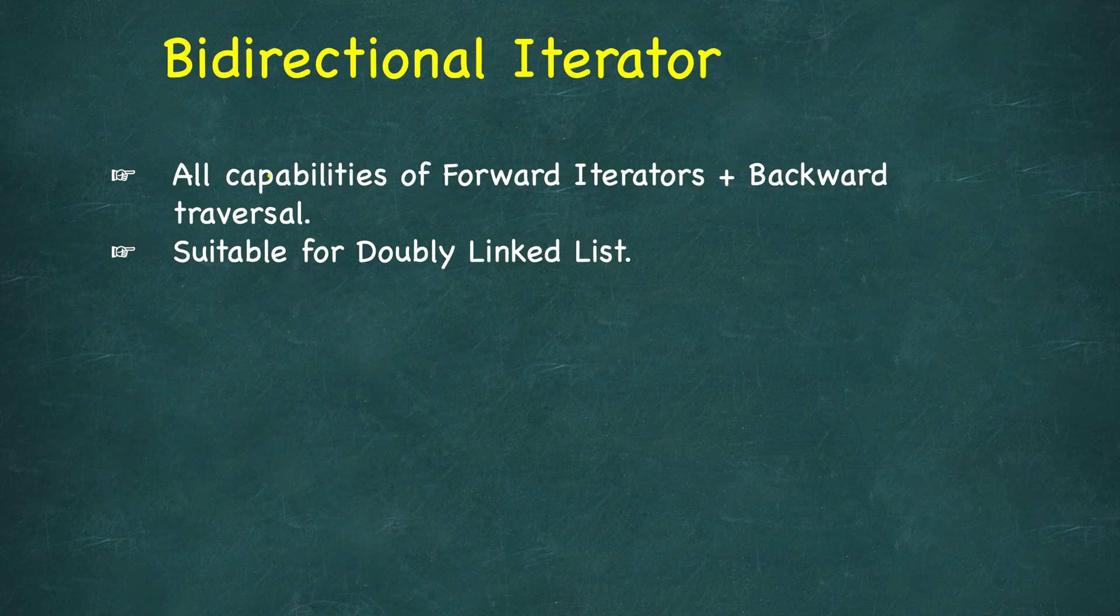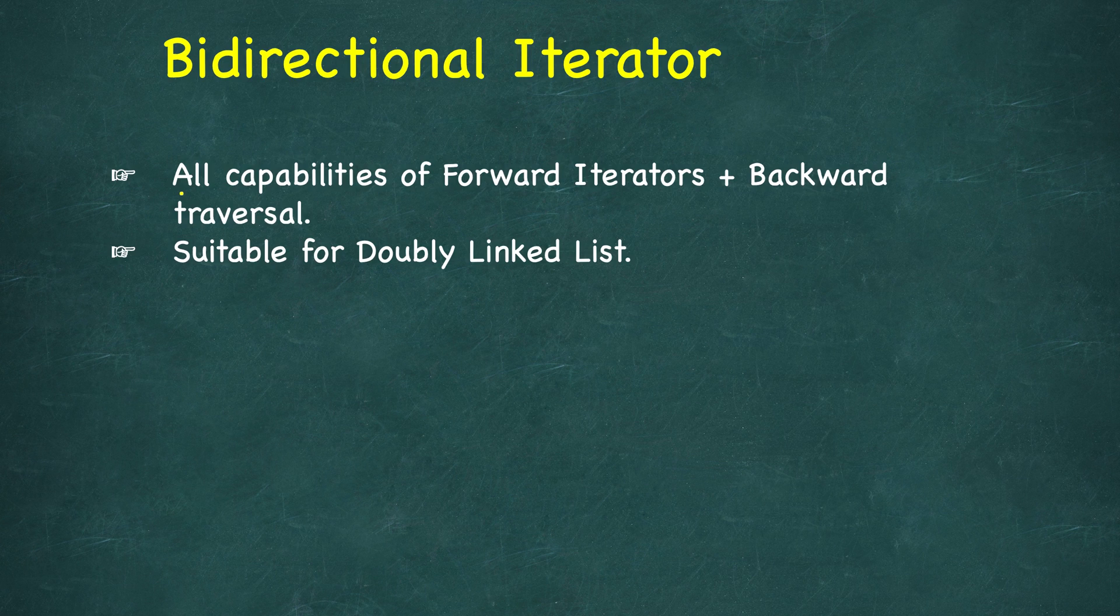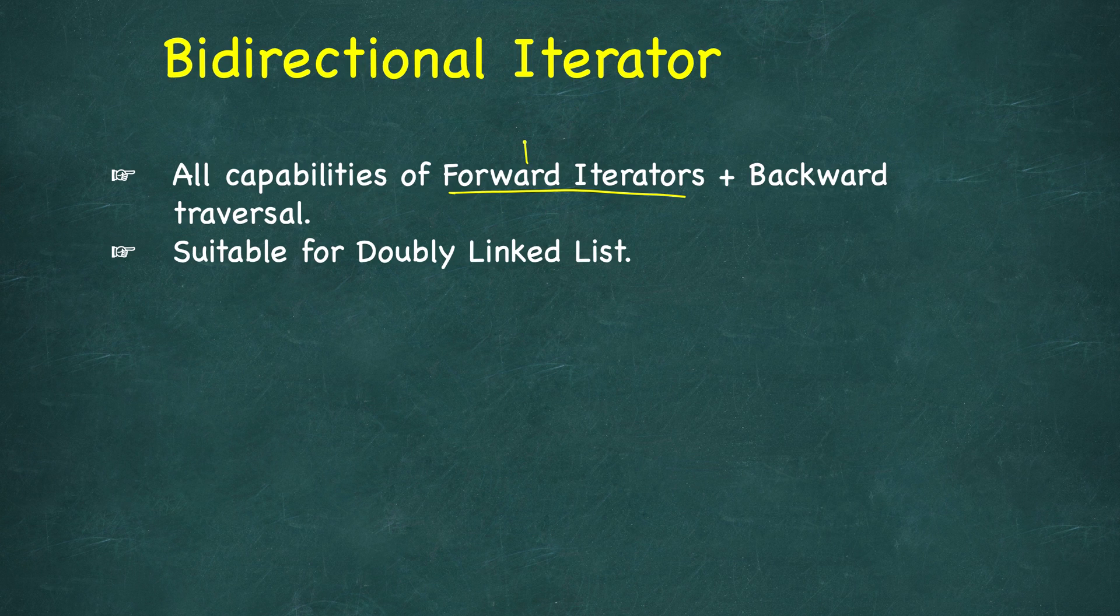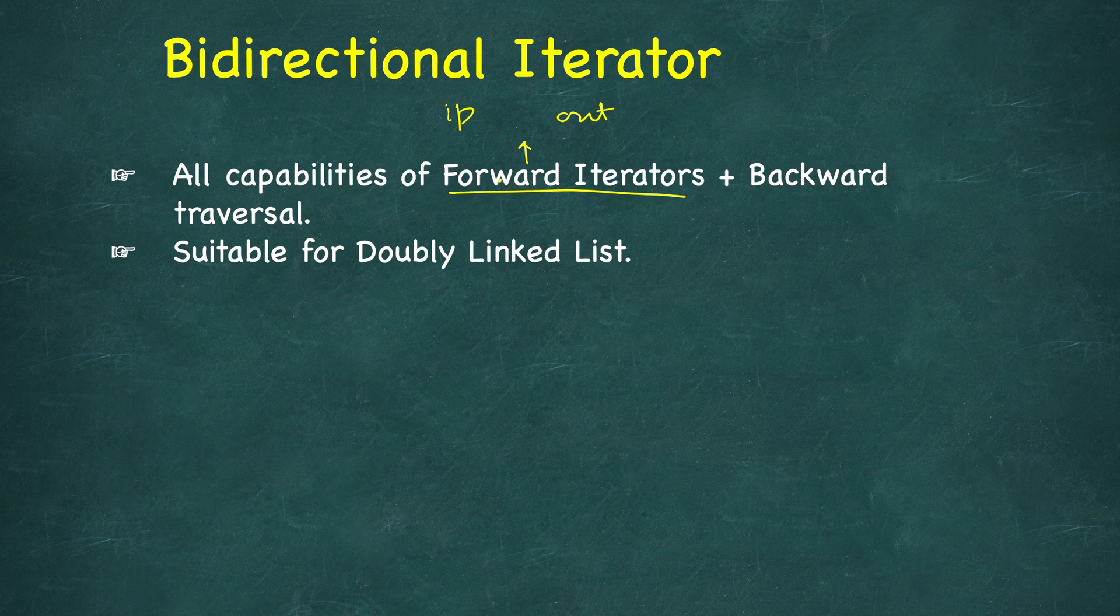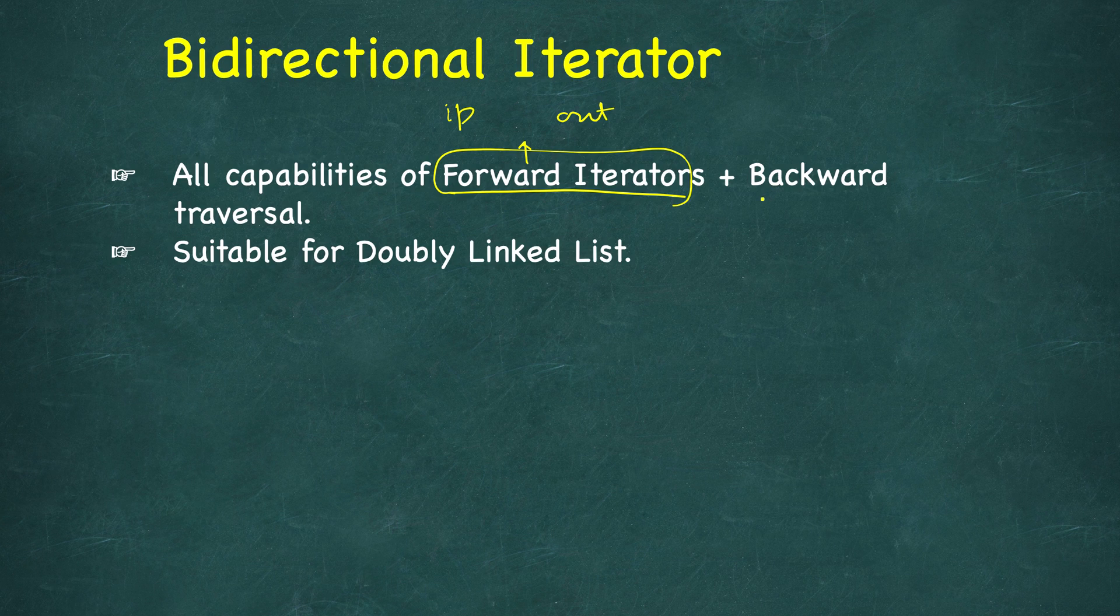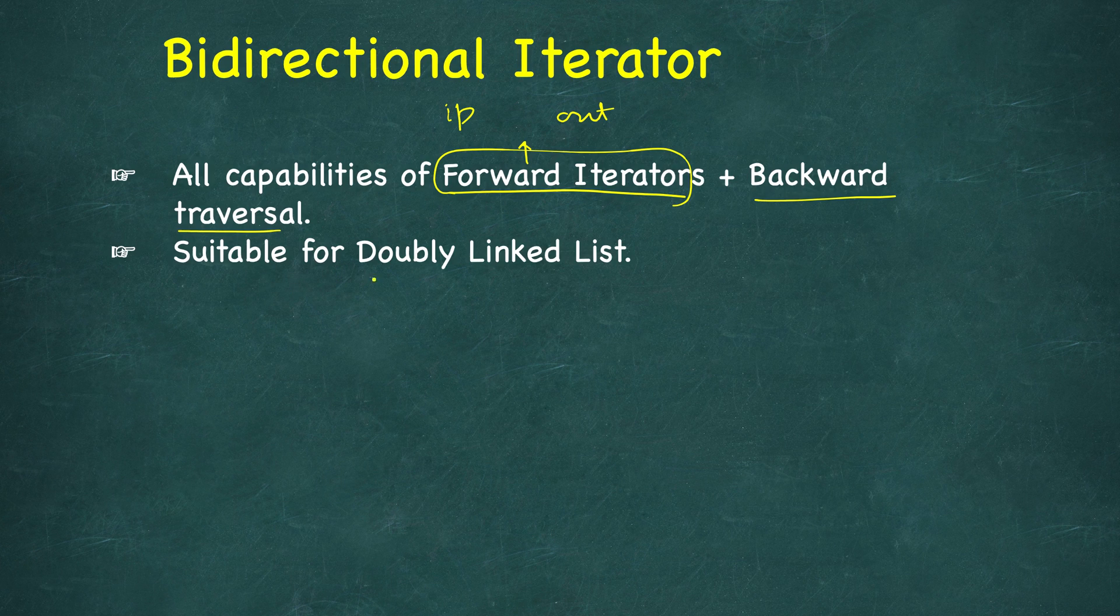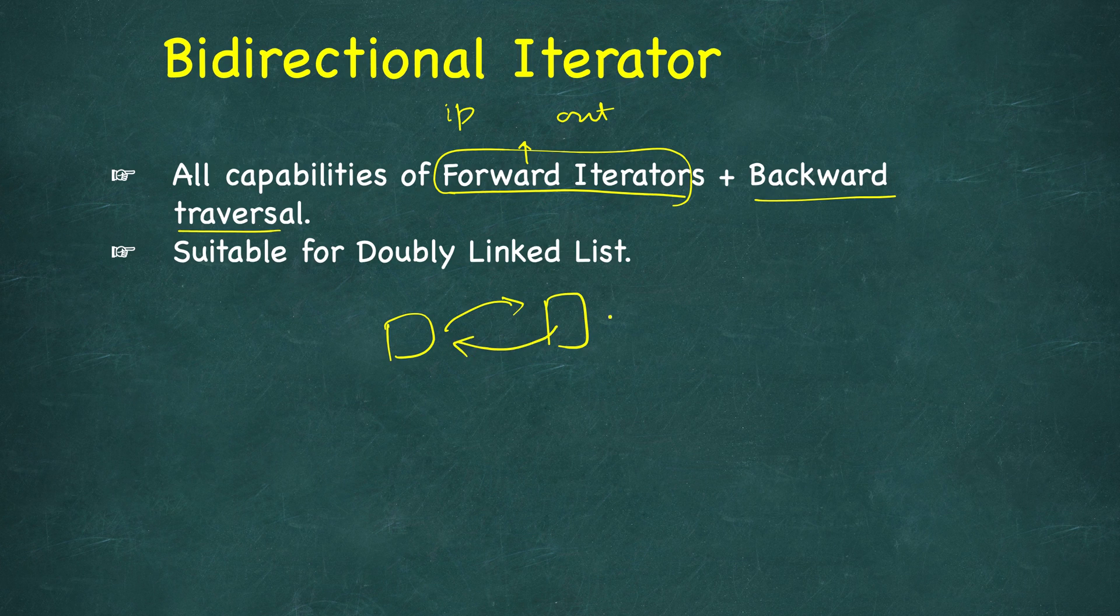Now let's look at the fourth one: bidirectional iterator. It combines all the capabilities of forward iterators. This naturally means that all the capabilities of input and output are also combined, since forward already combined these capabilities. Bidirectional iterator combines the capabilities of forward iterators and additionally allows backward traversal. Now you can do minus minus. It's suitable for doubly linked lists where you may need to go forward as well as backward.